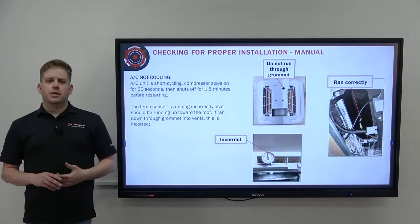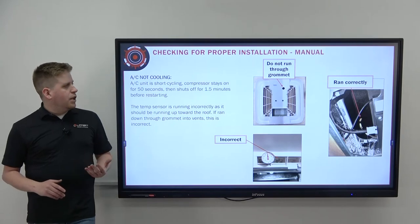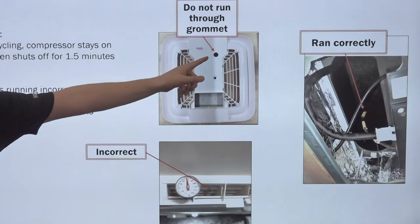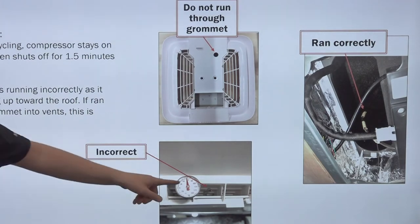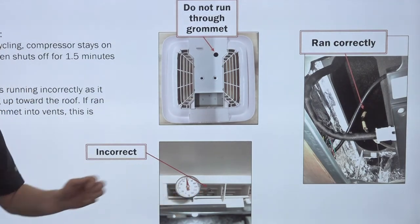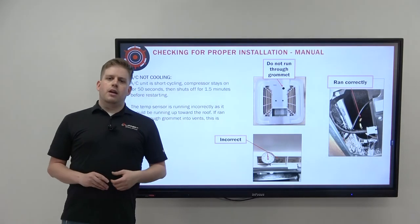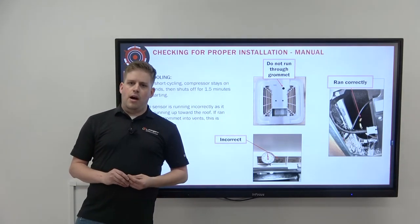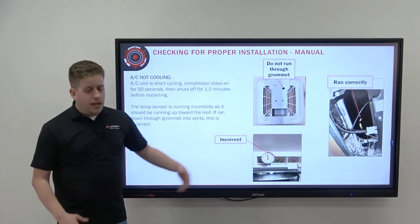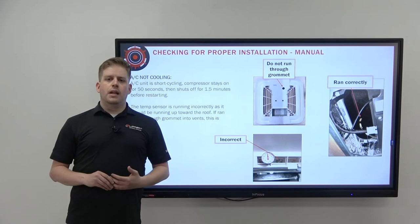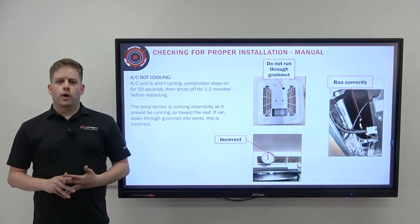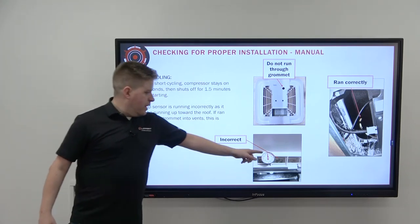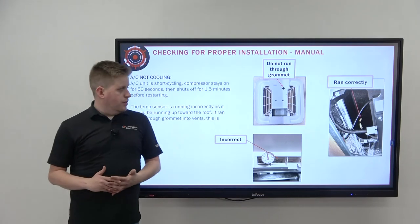On manual ceiling assemblies, make sure the capillary tube thermostat is in the return air. Many customers push it through the grommet, which sends the capillary tube toward the discharge air. That tube becomes very cold very quickly and turns the compressor off. Customers will complain that the compressor cycles on and off every two to three minutes. Make sure the capillary tube is in the proper location — in the return air.